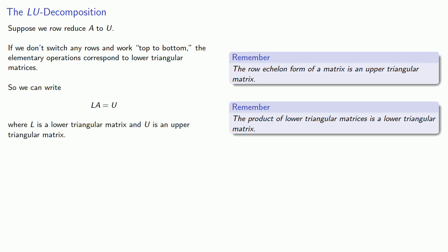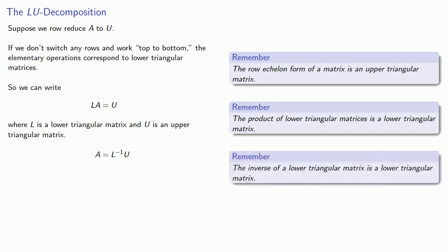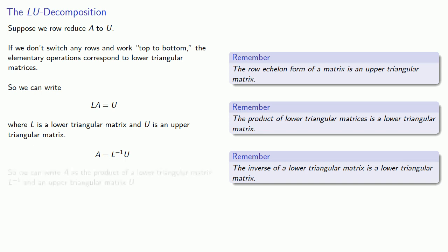This means we can write A as a product of L inverse and U, where U is an upper triangular matrix. If we multiply both sides by L inverse, we get A equals L inverse times U. And remember, the inverse of a lower triangular matrix is also a lower triangular matrix, so L inverse is a lower triangular matrix and U is an upper triangular matrix.